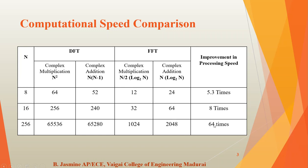For 256 number of samples, it gives 44 times improvement in processing speed. From this analysis, we can conclude: increasing the number of samples provides greater improvement in processing speed. For 8 samples, 5.3 times improvement is achieved; for 16 samples, 8 times improvement is achieved. As the number of samples increases, the improvement in processing speed grows significantly. FFT is therefore an efficient algorithm and computational process to achieve high speed computation.